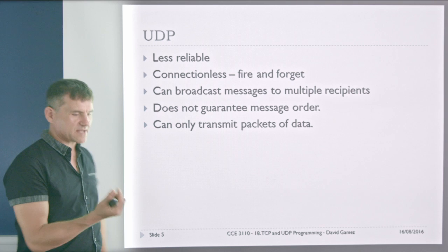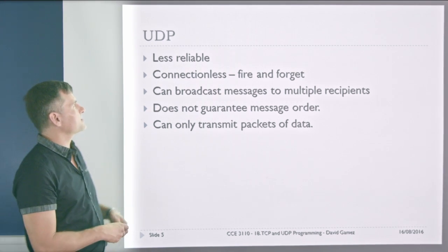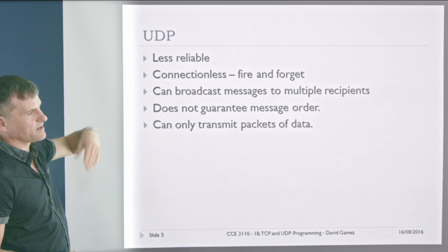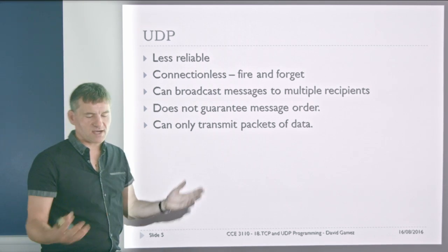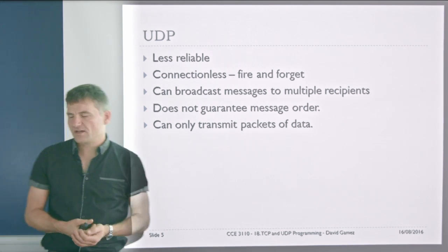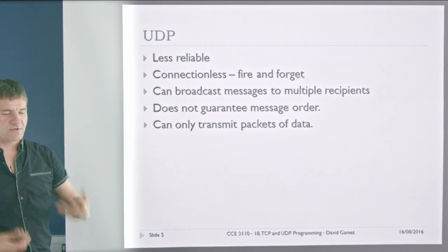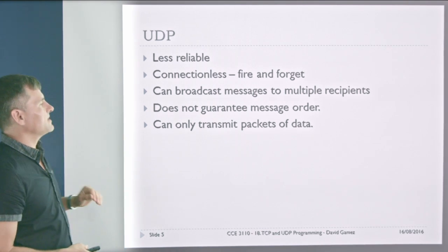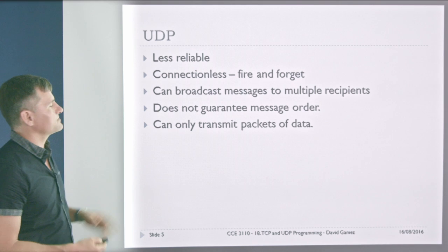UDP is a packet or datagram-based protocol. It's less reliable — you just fire off the packet and hope it gets there. You can do broadcast. For example, it uses this broadcast facility for services to announce their presence. There's no guarantee of message order, and it works with packets or datagrams.